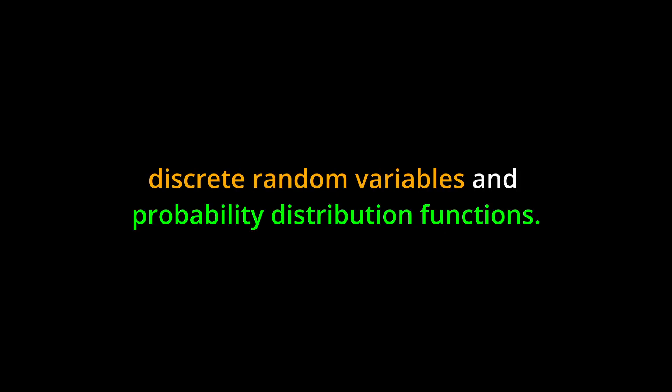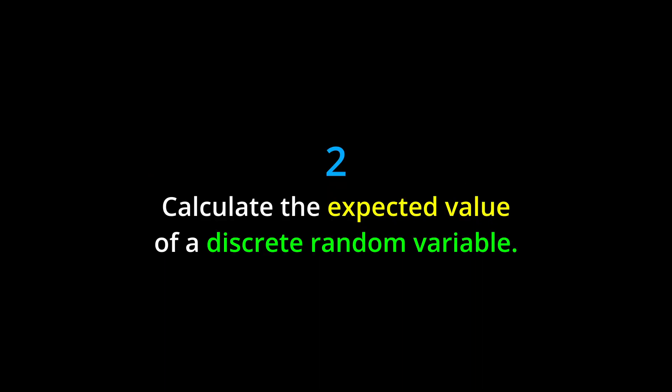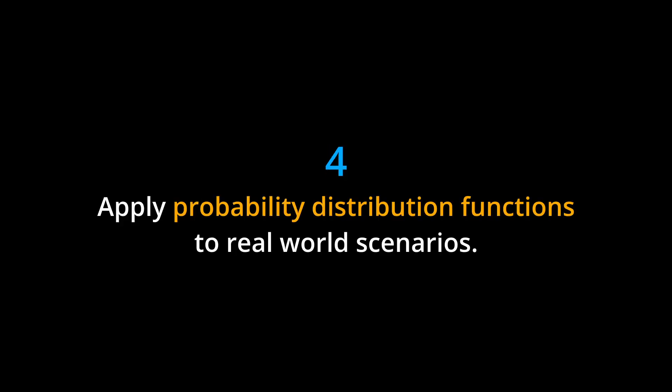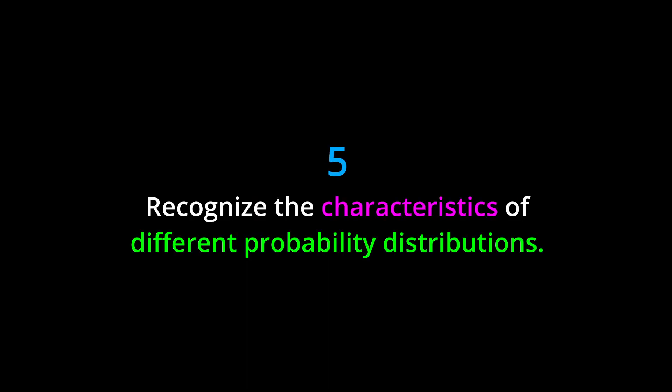Learning Objectives. By the end of this chapter, you should be able to: 1. Understand the concept of discrete random variables and probability distribution functions. 2. Calculate the expected value of a discrete random variable. 3. Calculate the standard deviation of a discrete random variable. 4. Apply probability distribution functions to real-world scenarios. 5. Recognize the characteristics of different probability distributions.